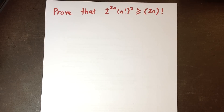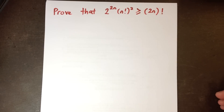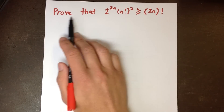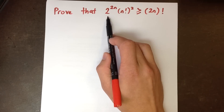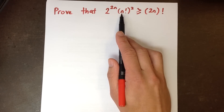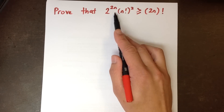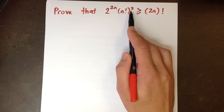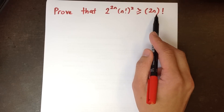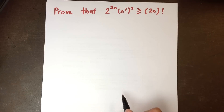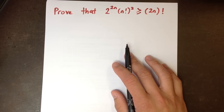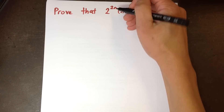Here's a proof by mathematical induction, and it's an inequality — basically a mathematician's nightmare. Prove that 2 to the power of 2n, multiplied by n factorial all squared, is greater than or equal to 2n all factorial. This is a mathematician's nightmare because it's got every nasty ingredient possible.